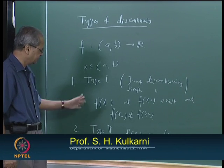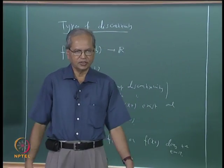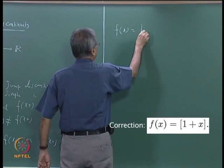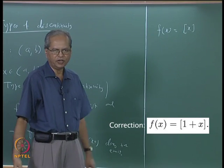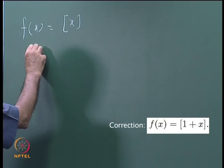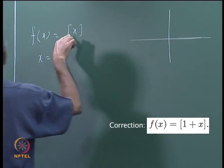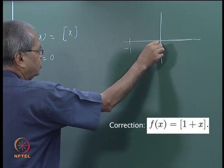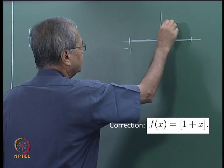Before proceeding further, let us see some examples. Let us take f(x) = ⌊x⌋, the integral part of x (greatest integer not greater than x), defined from R to R. Consider x = 0. In the interval (−1, 0), the value of ⌊x⌋ is −1 — wait, actually in (−1, 0) it will be −1, and in [0,1) its value will be 0.